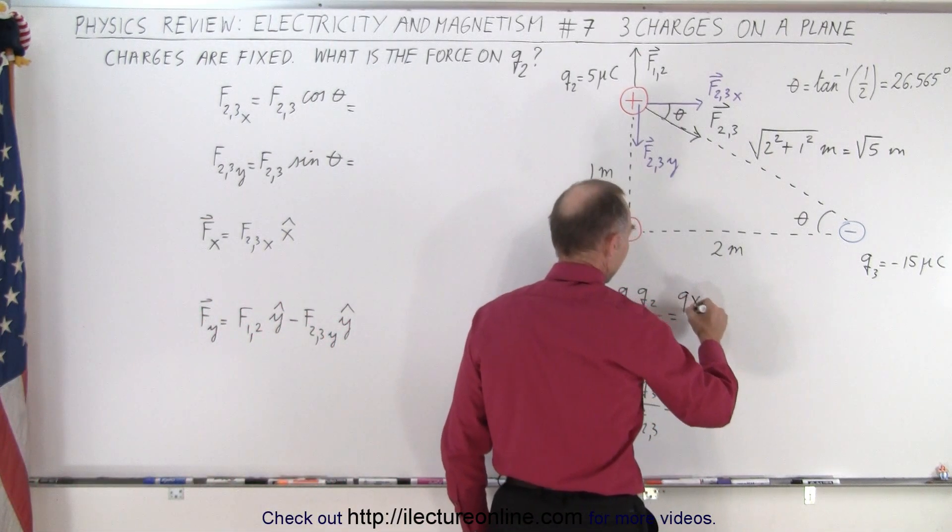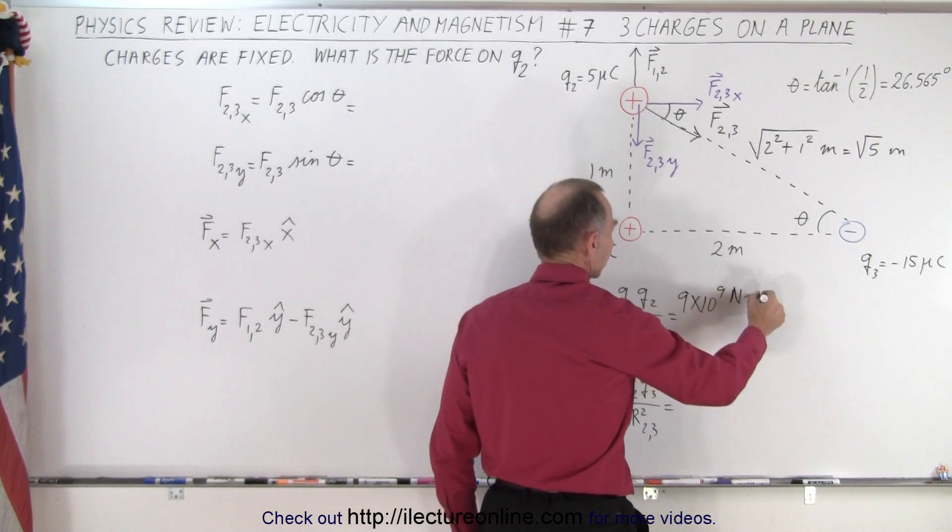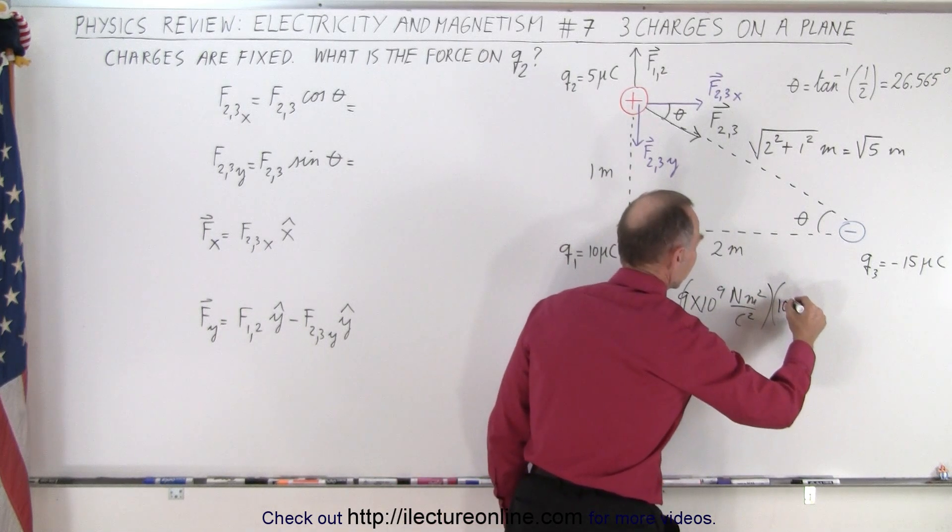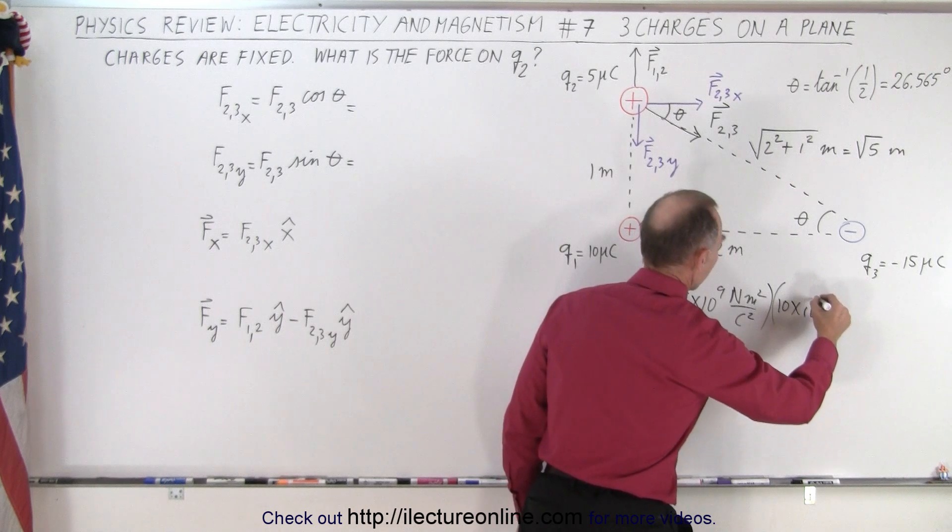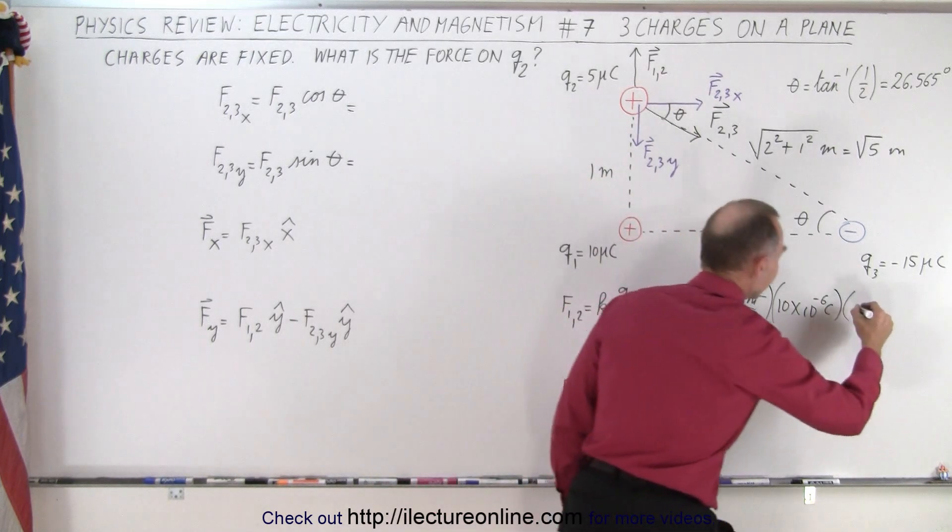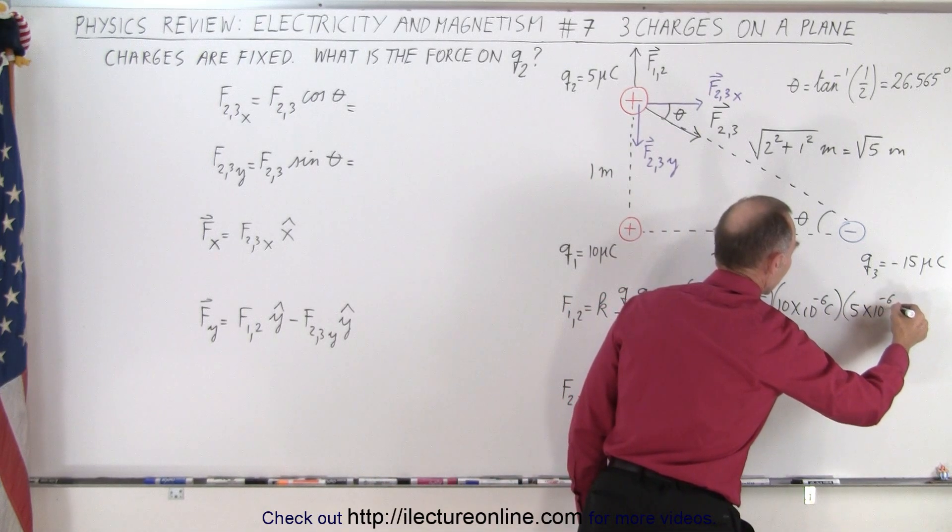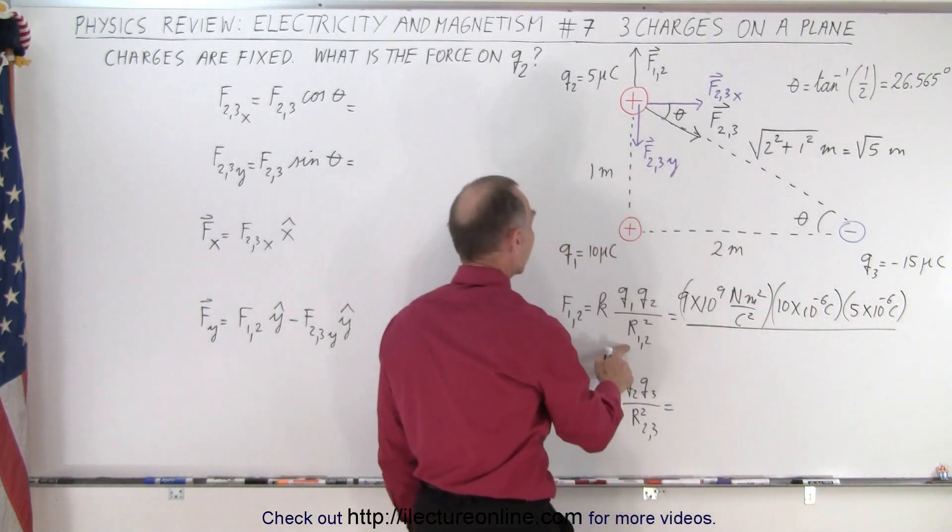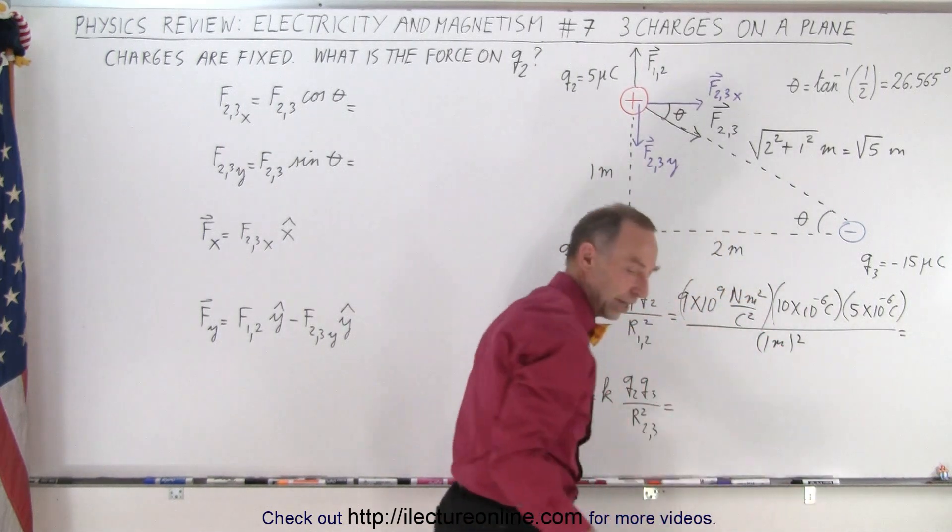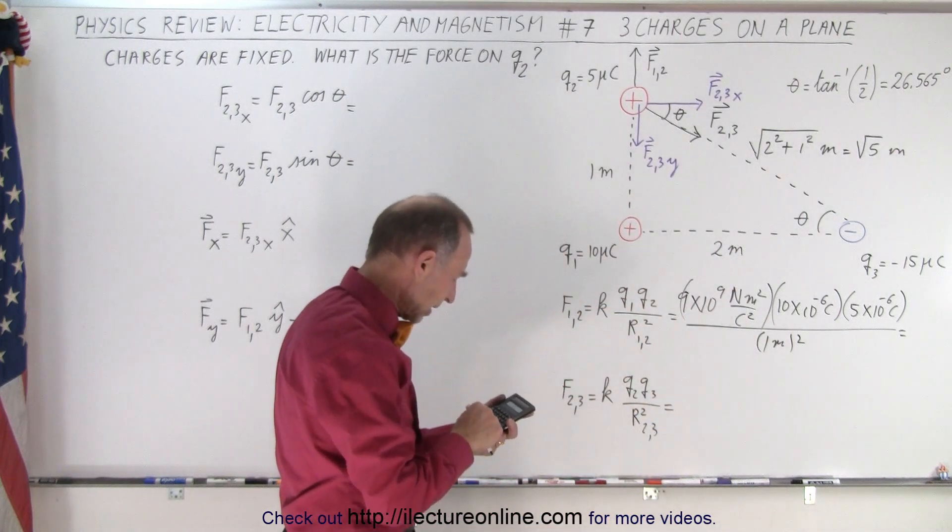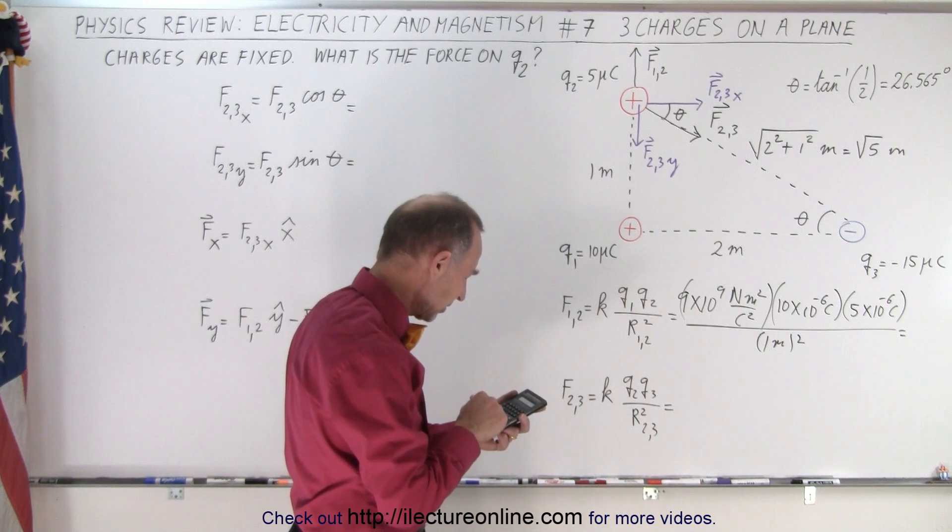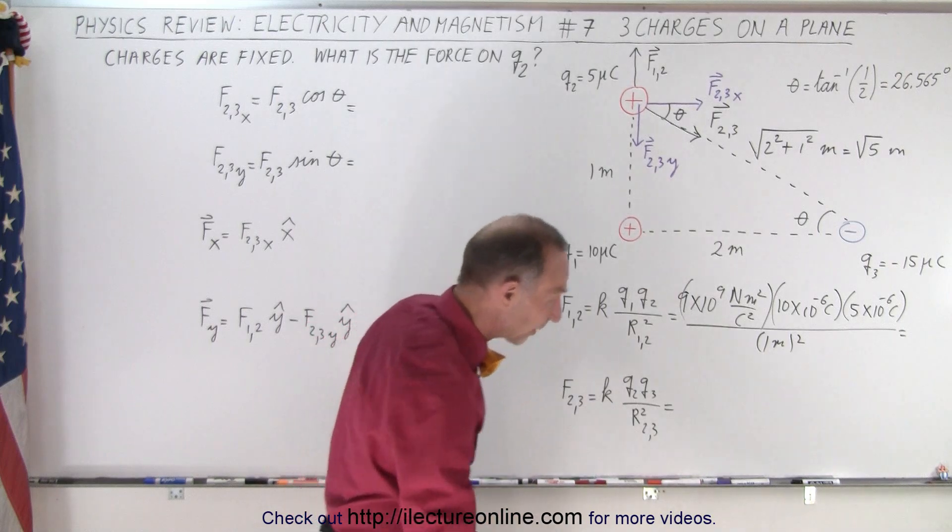So this is 9 times 10 to the 9th newtons meters squared per coulomb squared. So this is equal to Q1, which is 10 times 10 to the minus 6 coulombs. And then this one right here is Q2, which is 5 times 10 to the minus 6 coulombs. And divide the whole thing, divide it by R12, which is 1 meter squared. So we have 9e to the 9th times 10e to the 6th minus times 5e to the 6th minus equals, and so it's 0.45 newtons.